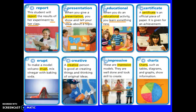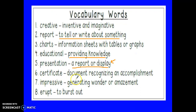'Certificate.' A certificate is an official piece of paper given for an achievement. When I see 'given for an achievement,' that helps me understand what a certificate is — a piece of paper given for an achievement. The actual definition for 'certificate' is a document recognizing an accomplishment. A document could be like a piece of paper, just like we saw in our context clues, so a certificate is a document that recognizes an accomplishment or achievement.